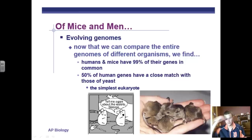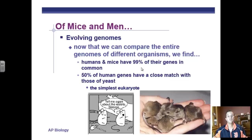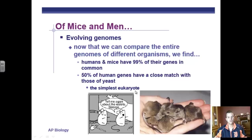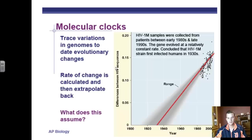Using molecular data, we've determined that humans and mice have 99% of their genes in common — which is incredible. We use that as a measure of degrees of relatedness. Additionally, 50% of our genes closely match the genes of standard yeast — the same yeast you use to make bread rise. This is more evidence that we evolved from very simple eukaryotes, organisms with a well-defined nucleus.